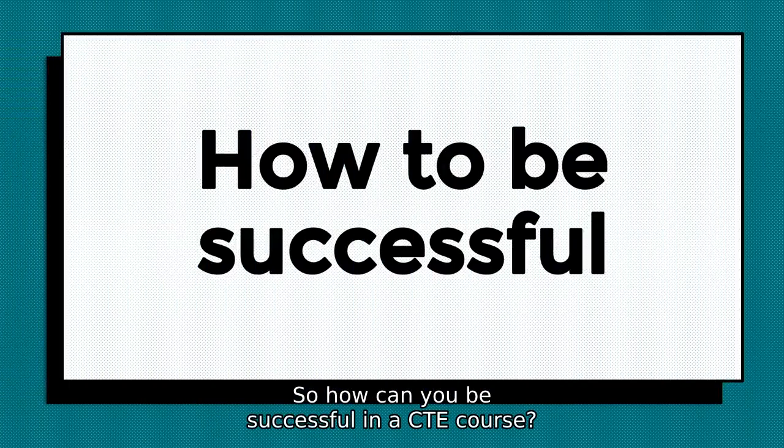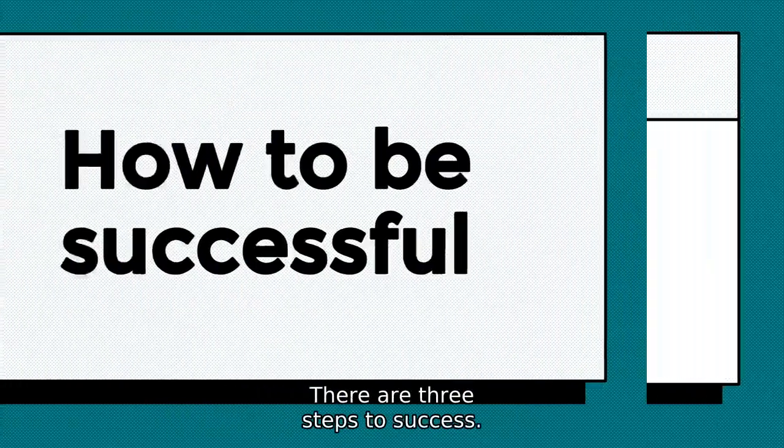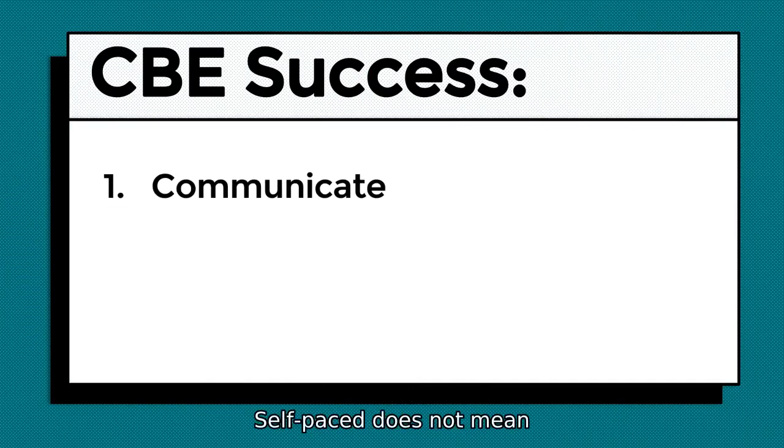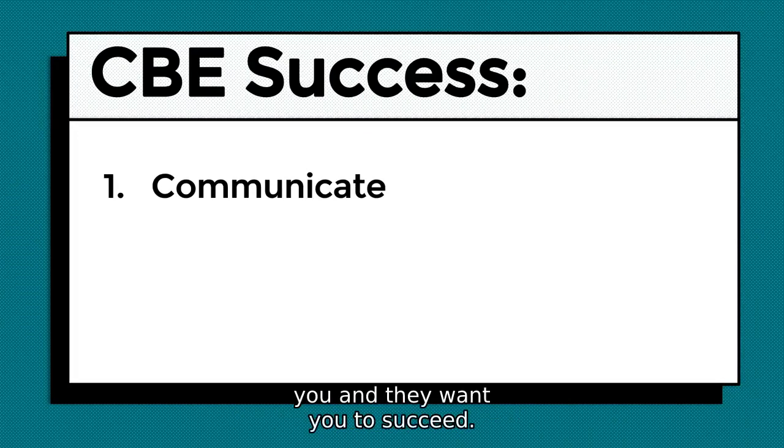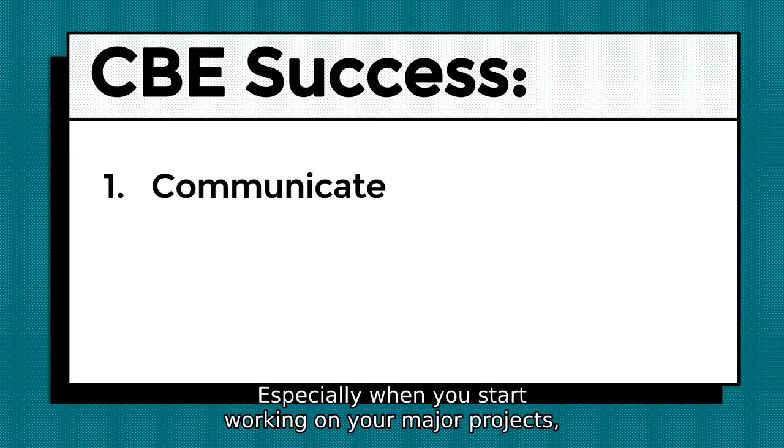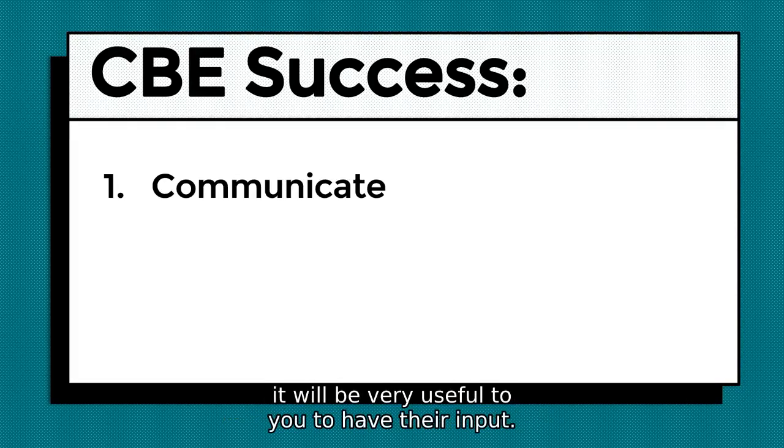So, how can you be successful in a CBE course? There are three steps to success. First, make sure that you communicate with your instructor. Self-paced does not mean you have to do it all on your own. Your instructor is there to help you, and they want you to succeed. If you have any questions, don't hesitate to send them an email or request a Zoom call. Especially when you start working on your major projects, it will be very useful to you to have their input.